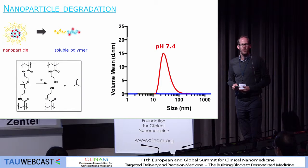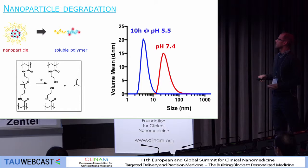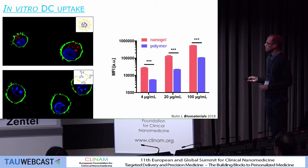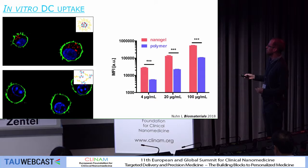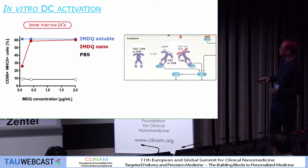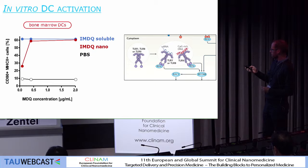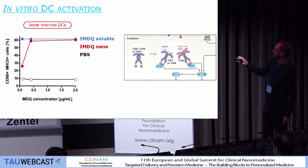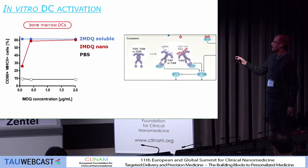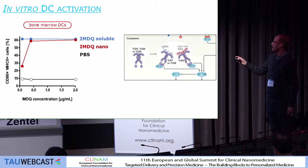And that's indeed what happens. If you take these particles at pH 7.4, you measure a size of roughly 50 nanometers by DLS. If you expose them for a few hours at acidic pH, you only measure the size of soluble unimers. These particles are also taken up by dendritic cells in vitro to a higher extent than soluble polymers made from the same material. They're also capable of activating dendritic cells. We took bone marrow-derived dendritic cells: the TLR agonist in soluble form is highly potent, so it leads to activation of dendritic cells irrespective of the concentration range used. In the case of the TLR agonist conjugated to nanoparticles, we lose some activity at lower concentration, but we regain activity at higher concentration.